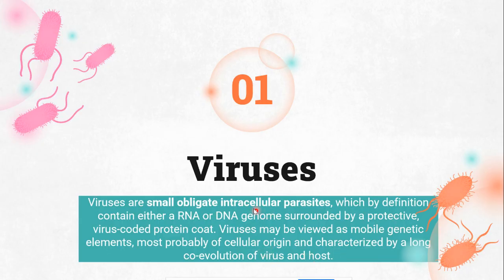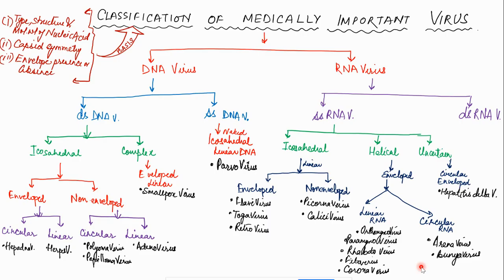Viruses are small, obligate intracellular parasites that need a host for their life cycle. On the basis of structure, molecular weight, capsid symmetry, and presence or absence of an envelope, they are divided into DNA and RNA viruses. DNA viruses can be double-stranded or single-stranded, with icosahedral or complex symmetry, and enveloped or non-enveloped. Enveloped icosahedral double-stranded DNA viruses with circular structure include Hepadna and Herpes; non-enveloped circular ones include Polyoma and Papilloma; linear ones include Adenovirus.